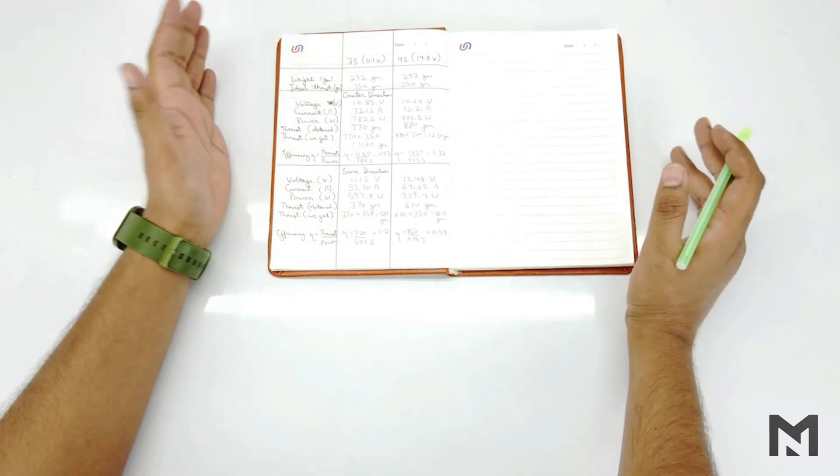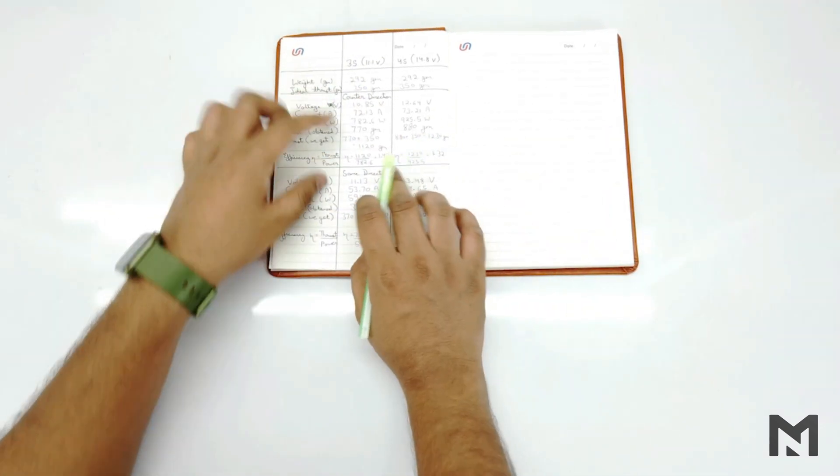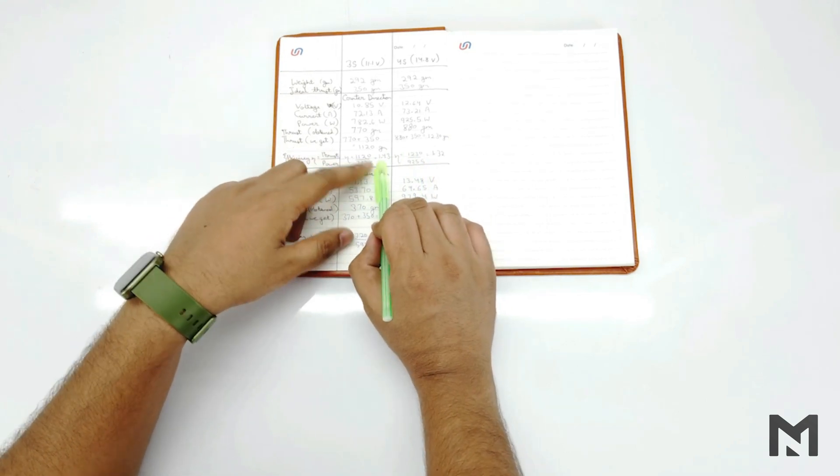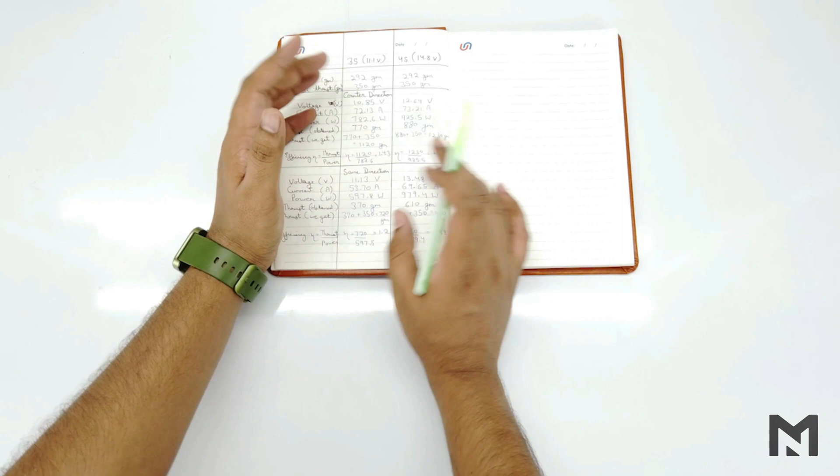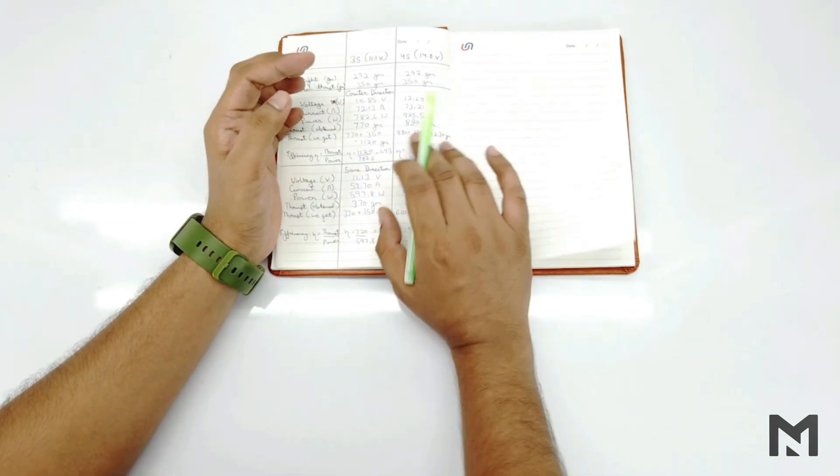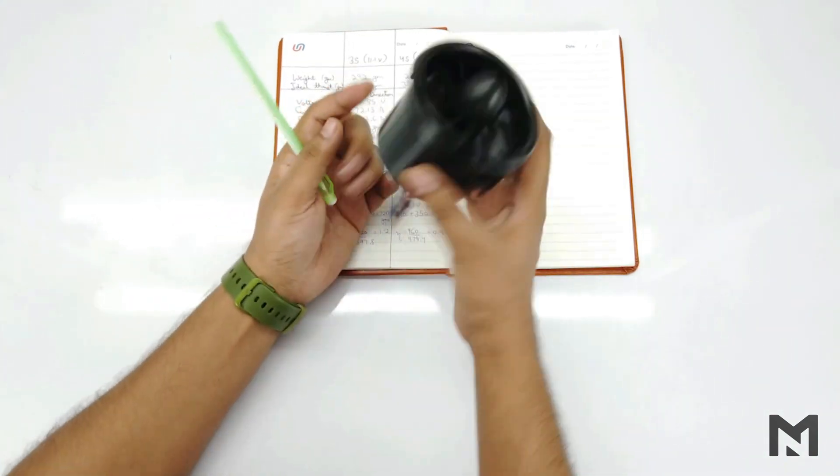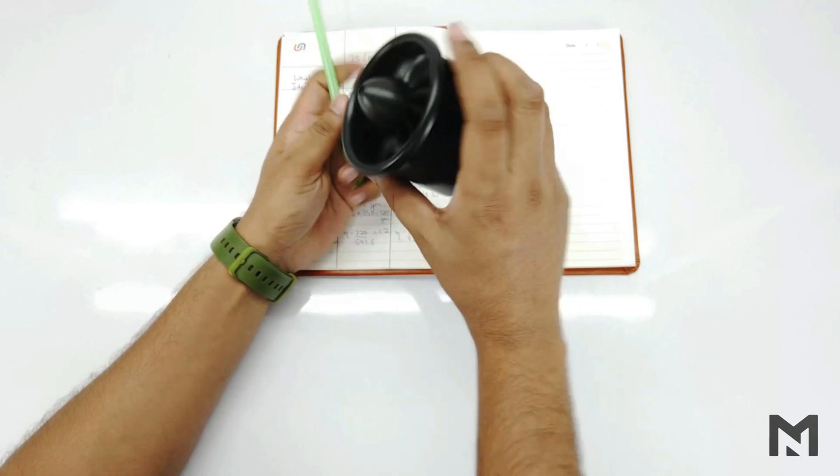So now our thrust test is completed and we have also designed a new EDF. The counter direction propeller EDF has 1.43 and 1.32 efficiency. No doubt it is less efficient as compared to running the motors using two blade propellers. But this efficiency is similar to what the market EDFs are giving. Like this market EDF.